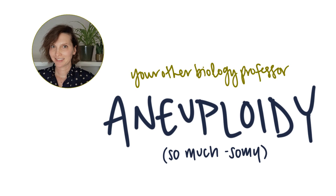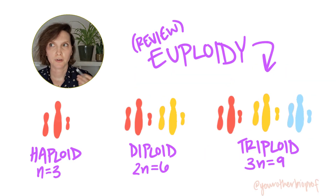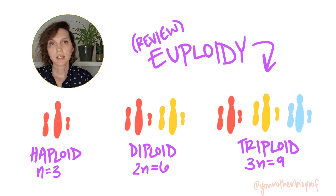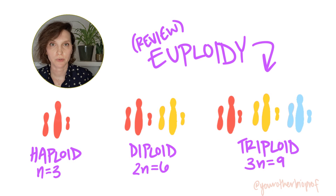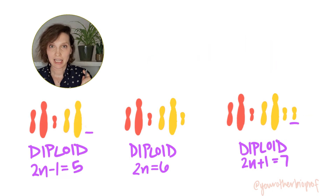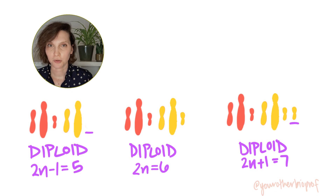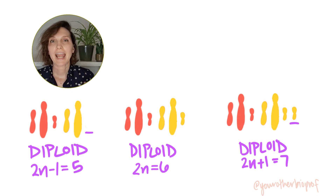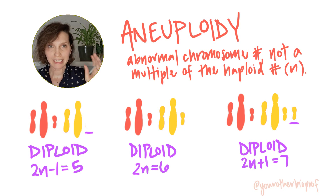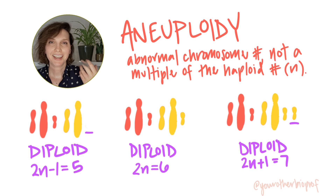Let's talk about -somy. In addition to having different numbers of complete sets of chromosomes, cells can also have abnormal counts of individual chromosomes — missing an individual chromosome or having an extra copy of an individual chromosome. This is called aneuploidy. So here we're not talking about the complete set, the total suite of chromosomes, but we're just looking at one chromosome or maybe a couple.